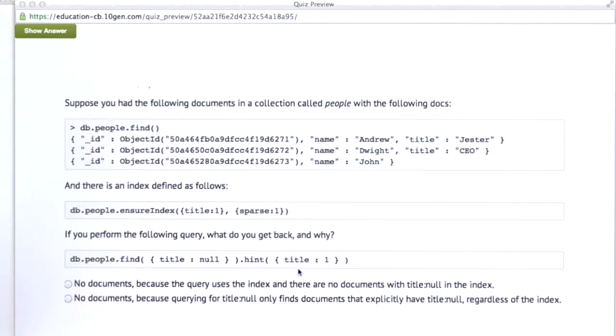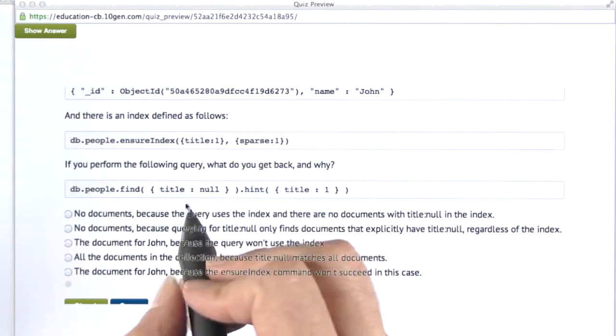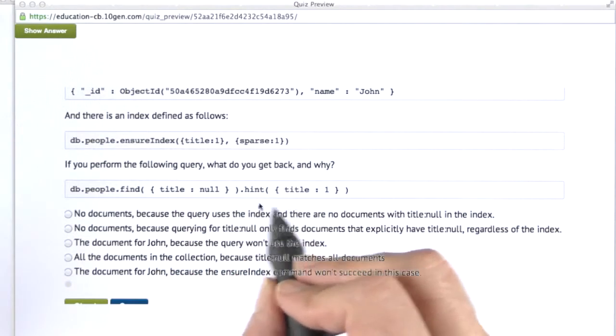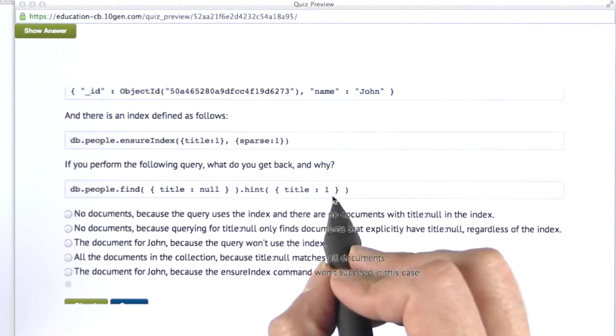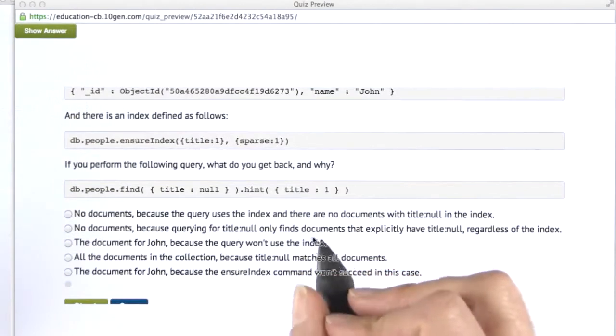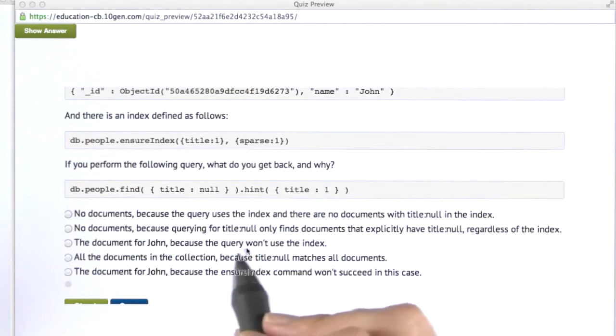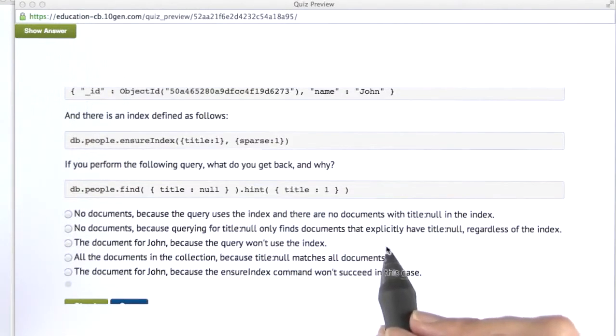So if you perform this following query, what do you get back and why? In MongoDB 2.6, if you perform the query and look for title null with a hint that it should use the title index, what would you expect to get back? The answers are: no documents because the query uses the index and there are no documents with title null in the index; no documents because querying for title null only finds documents that explicitly have title null, regardless of the index; the document for John because the query won't use the index; all the documents in the collection because title null matches all the documents; or a document for John because the ensureIndex command won't succeed in this case.